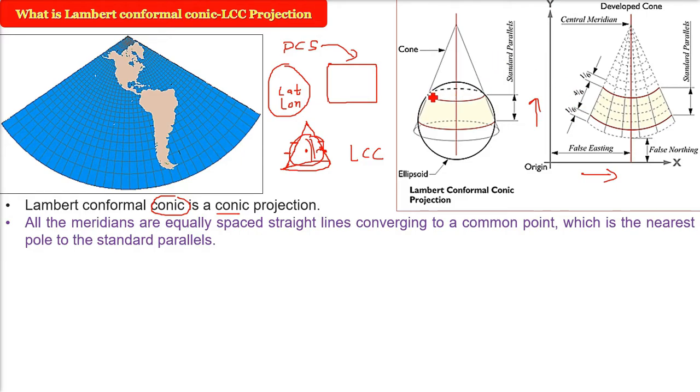All the meridians are the vertical lines, horizontal lines are the parallels. So all the meridians are equally spaced straight lines converging to a common point which is the nearest pole to the standard parallels.